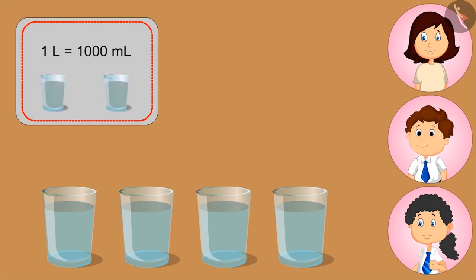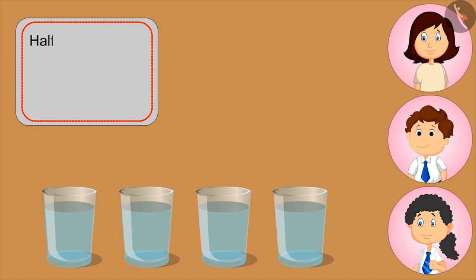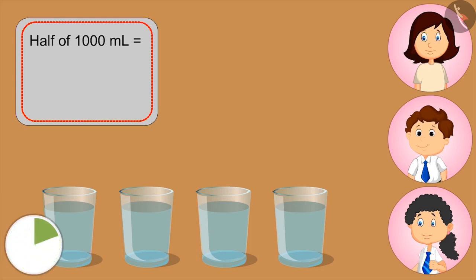Now if I fill these two glasses, then how much lemonade will be left in the jug? Half the jug is still full. What is the half of a litre? Kids, you can pause the video and think about the answer. Five hundred ml. This means two glasses contain five hundred ml of lemonade.